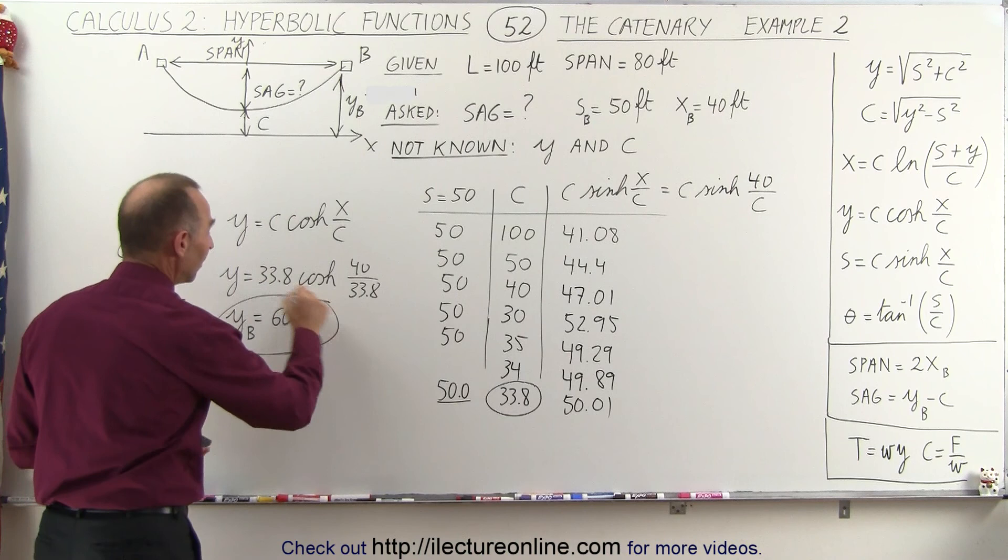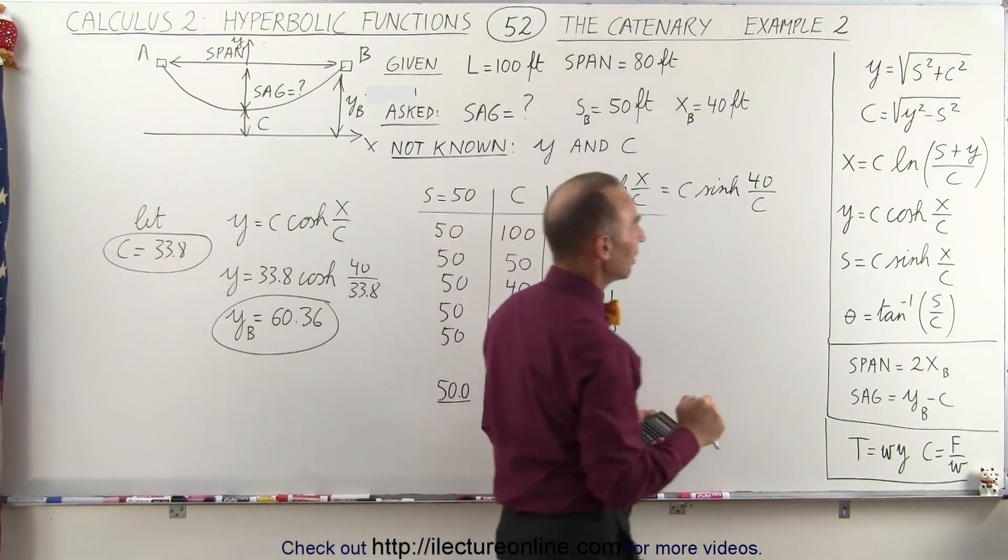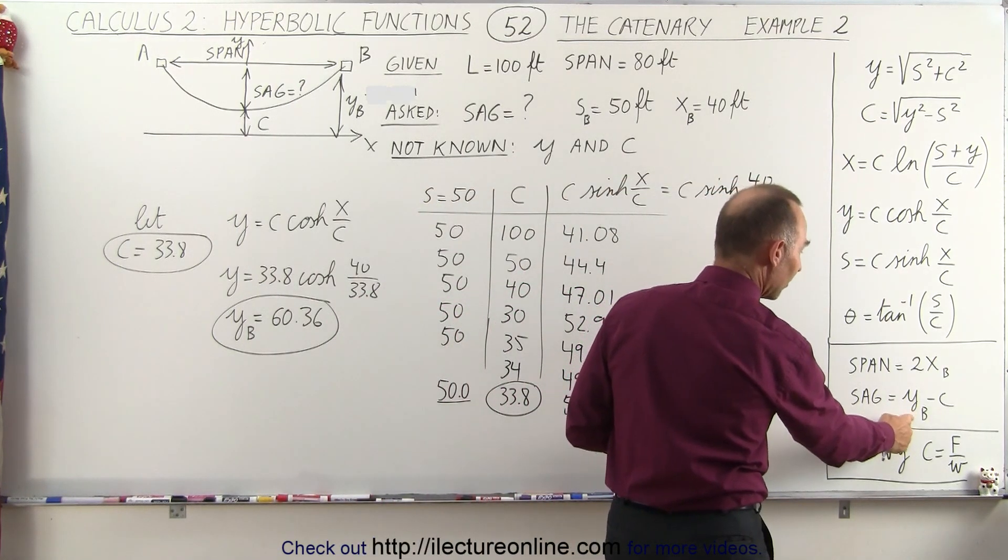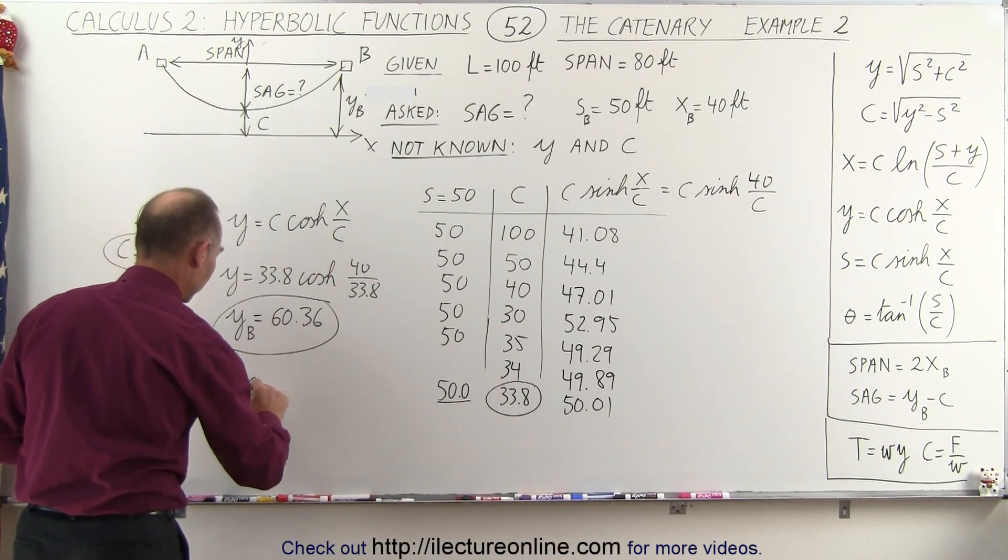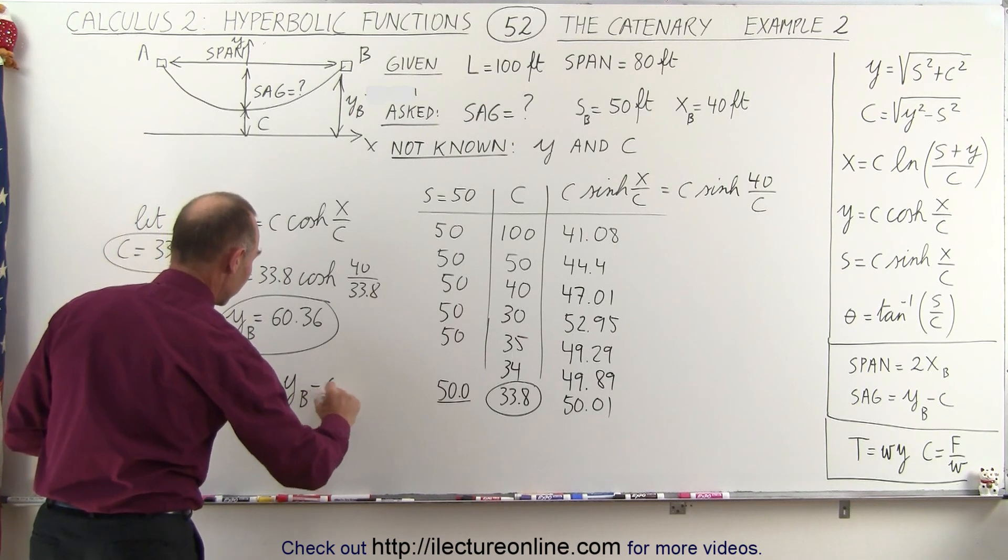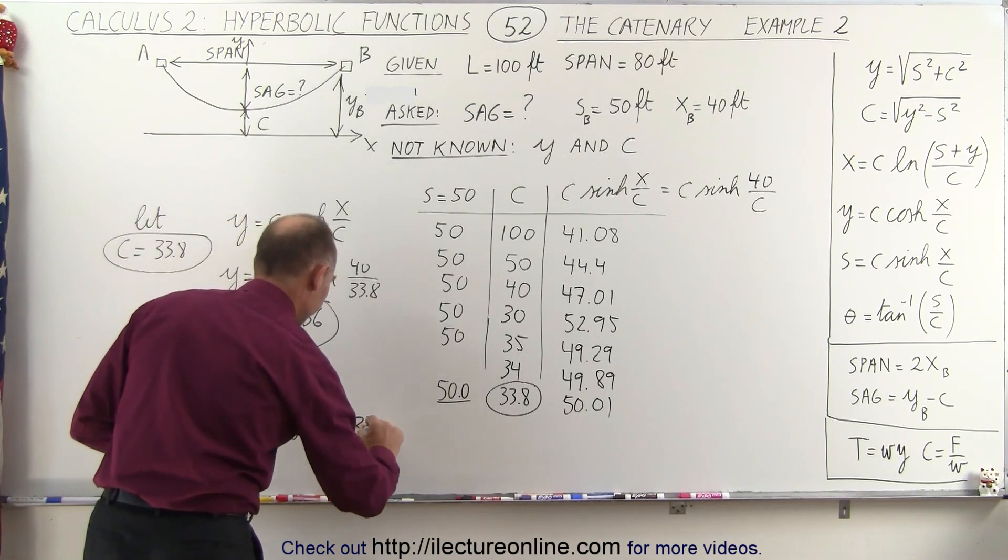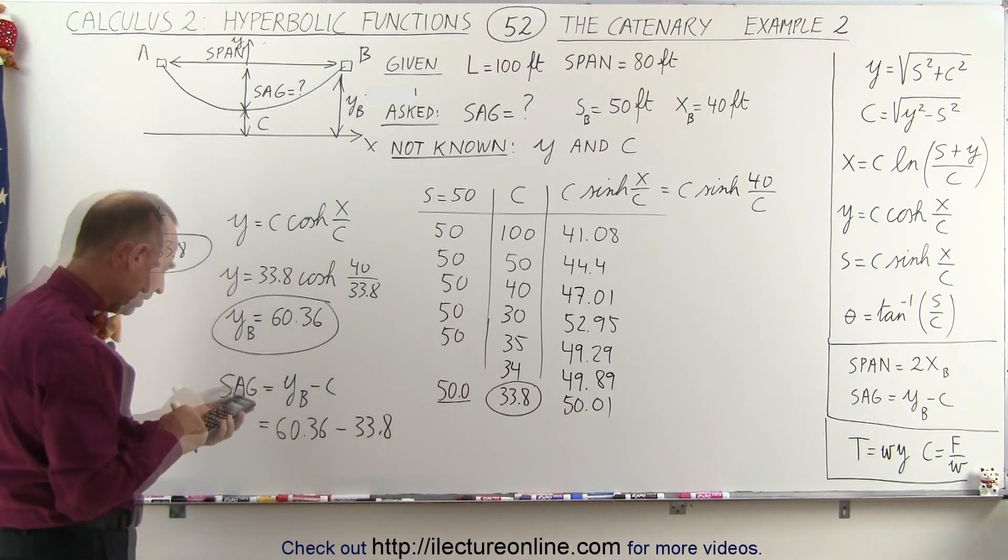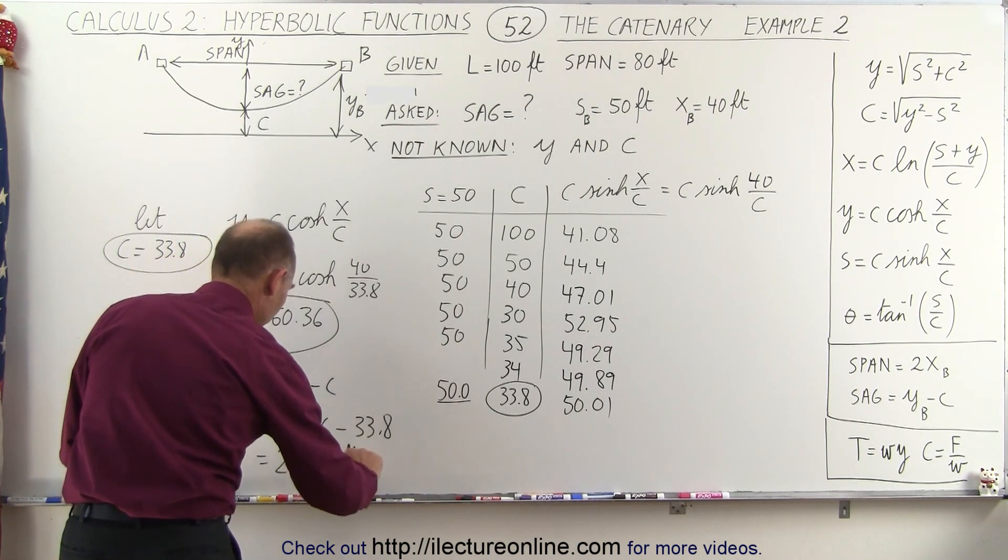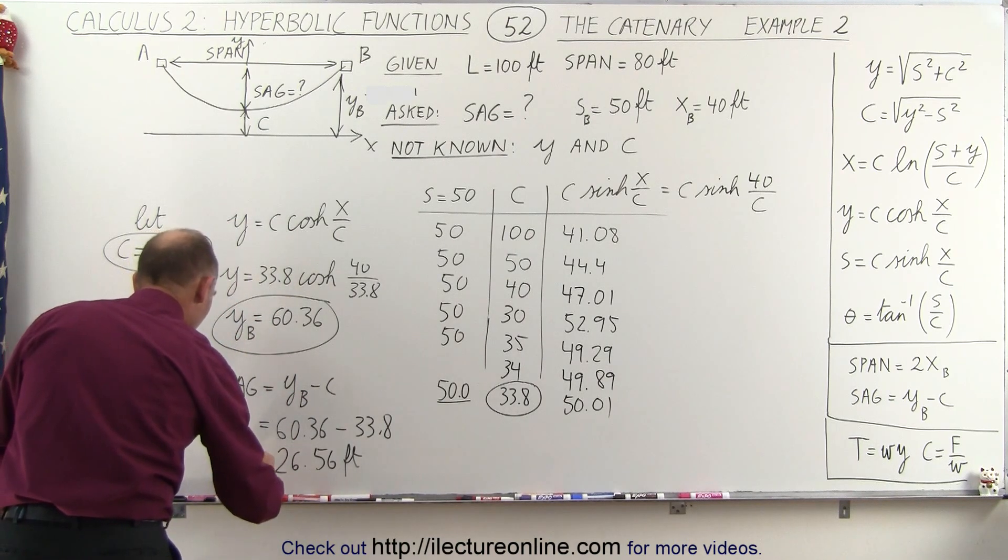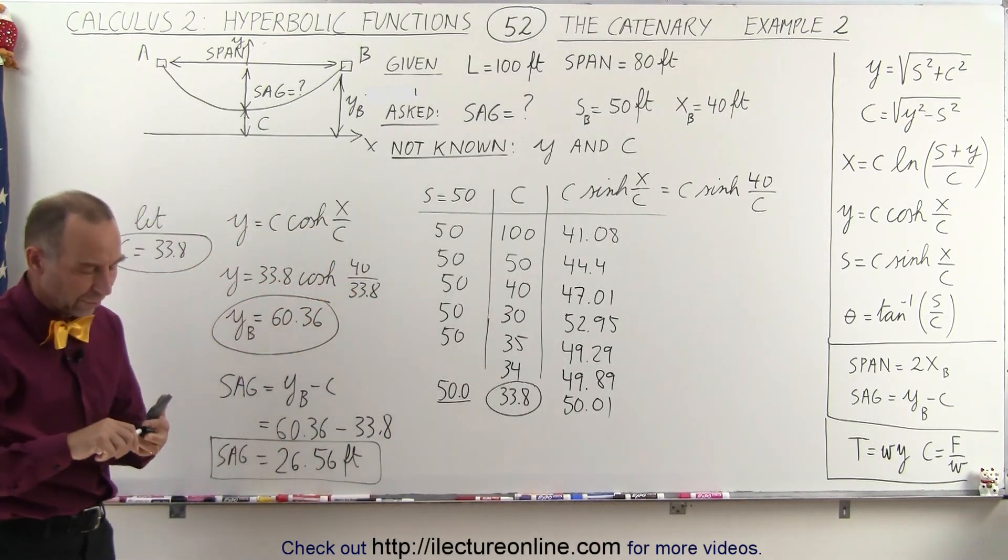And so once we have that and we have c, so c is equal to this value, now we can go and see what the sag is. The sag is y sub b minus c. So now we can find the sag which is ultimately what we're looking for. So sag equals y sub b minus c and y sub b is 60.36, c is 33.8, and we get 26.56 and of course our units were in feet. So the sag is 26.56 feet and that's pretty close to the actual answer.